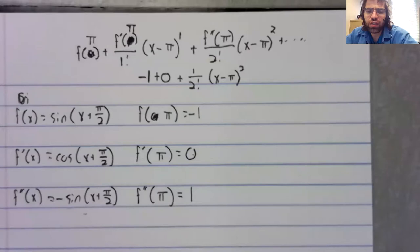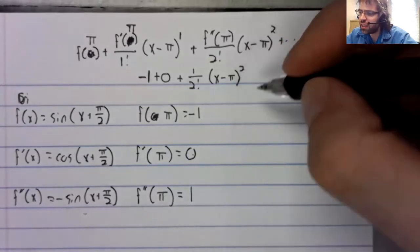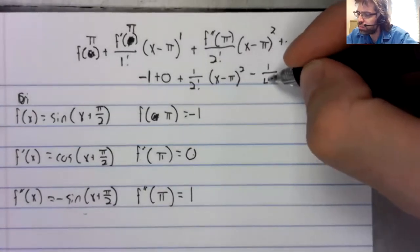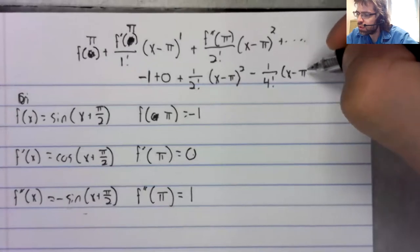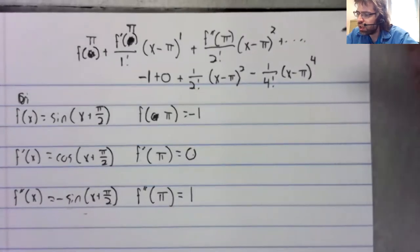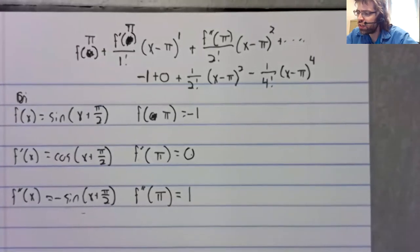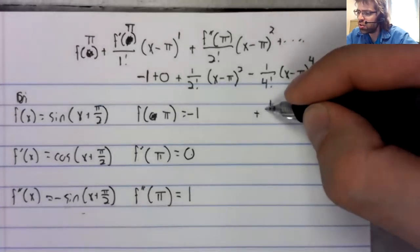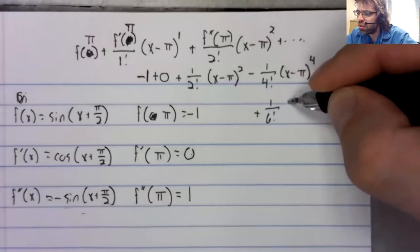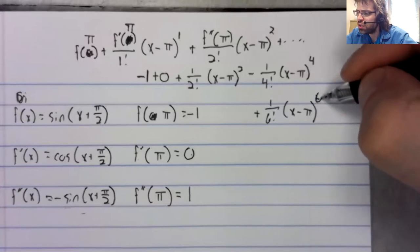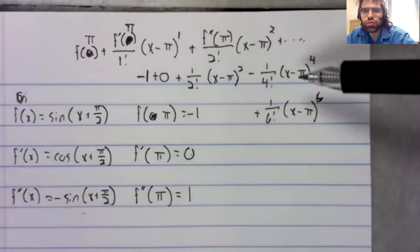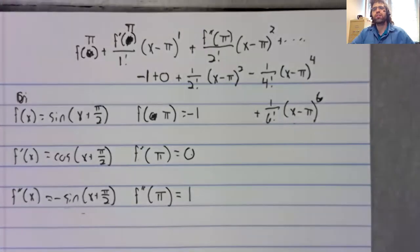The third derivative is zero. The fourth derivative is negative one. The fifth derivative is zero. The sixth derivative is positive one. And let's see, one, two, three, four. That's four non zero terms.